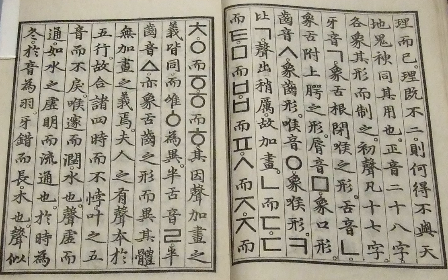ISO-TR 11941-1996 is a Korean romanization system used in ISO. It is not commonly used. One example of its use is in Unicode character names. The standard was withdrawn in December 2013. It is very similar to Yale romanization.